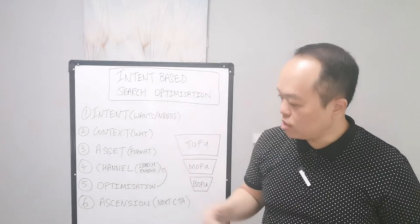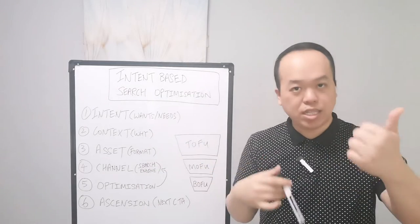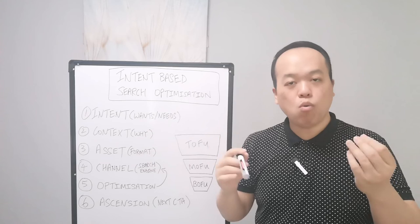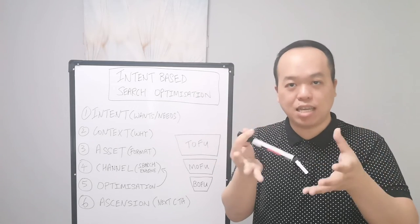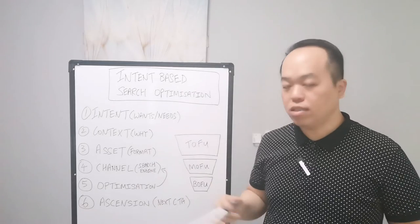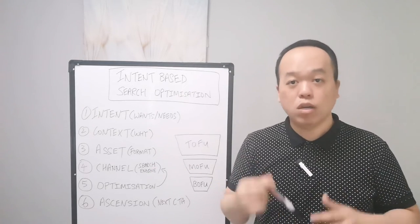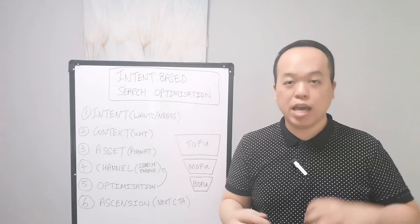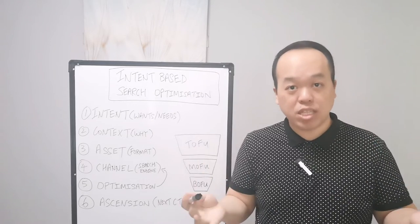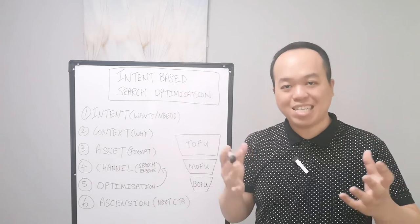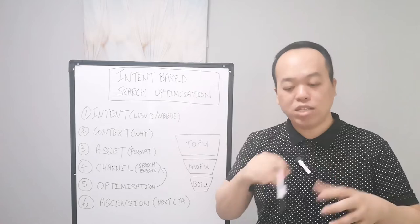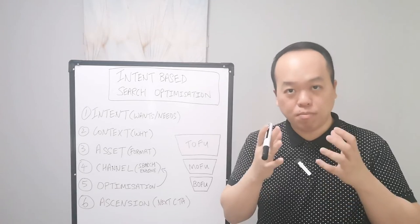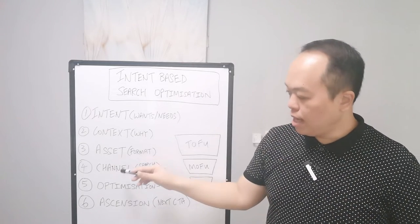The fourth step is the channel. After knowing the search intent, context, and the asset format, you need to know where that asset sits — which channel. The channel could be Google Search, YouTube, Amazon, TripAdvisor, or even Pinterest. Once you place your assets in the right channel and optimize them, they become searchable by your potential prospects.